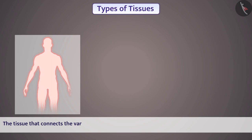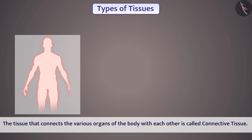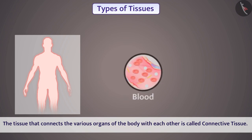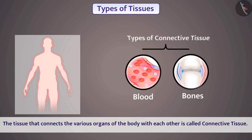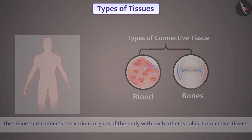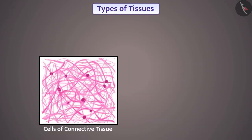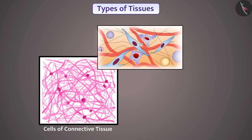The tissue that connects the various organs of the body with each other is called connective tissue. That's why blood and bones are types of connective tissue. The cells of the connective tissue are loosely packed and are embedded in an intercellular matrix.